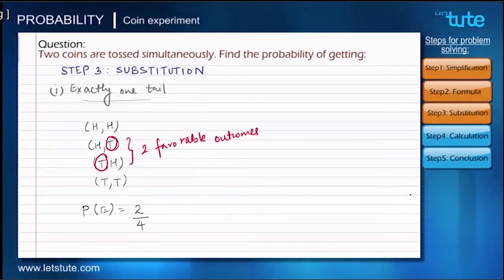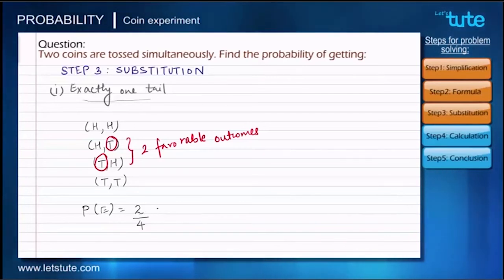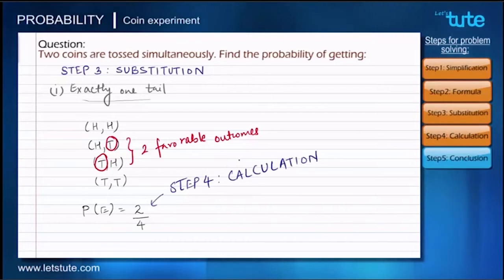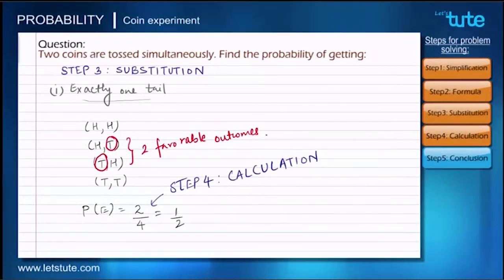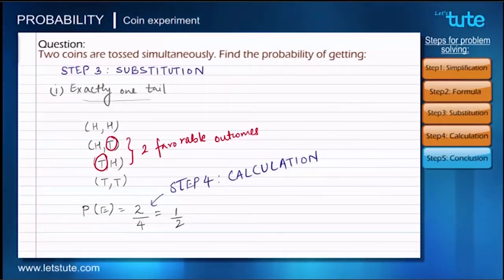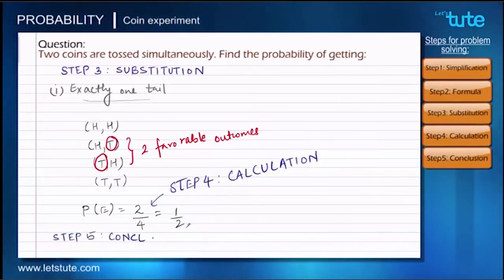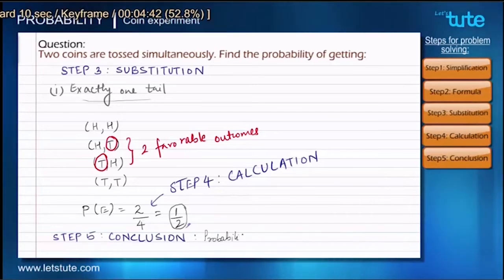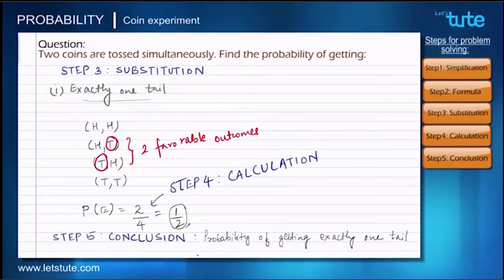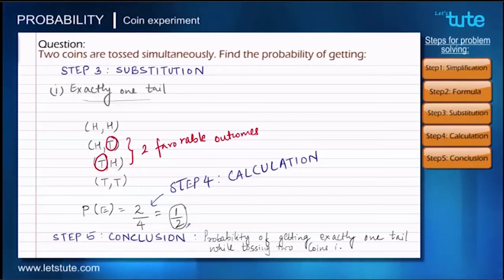We can further simplify this ratio by dividing numerator and denominator by 2. This calculation step comes directly after substitution, giving us 1 upon 2. Our job doesn't end there — after calculating the answer we have to conclude it. Step 5 is the conclusion step. We can say: the probability of getting exactly one tail while tossing two coins is 1 by 2.